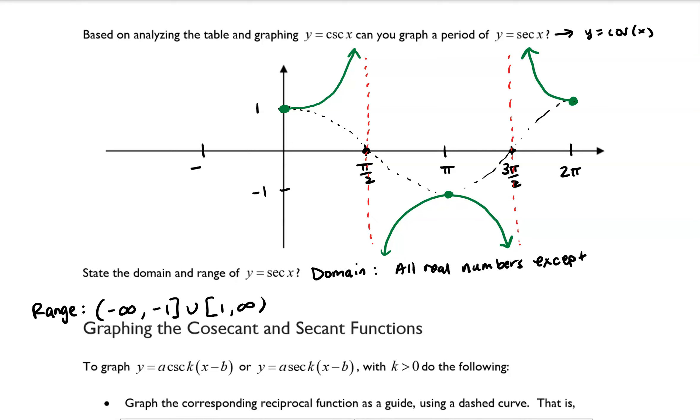There would be another one here at negative pi over 2, and another one on this side at 5 pi over 2. So all real numbers except odd integer multiples of pi over 2.